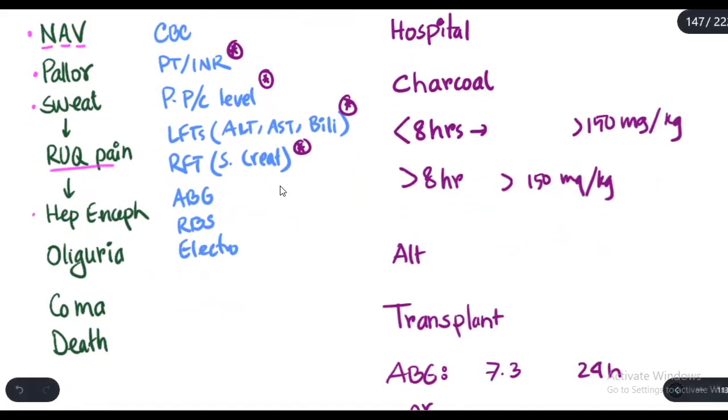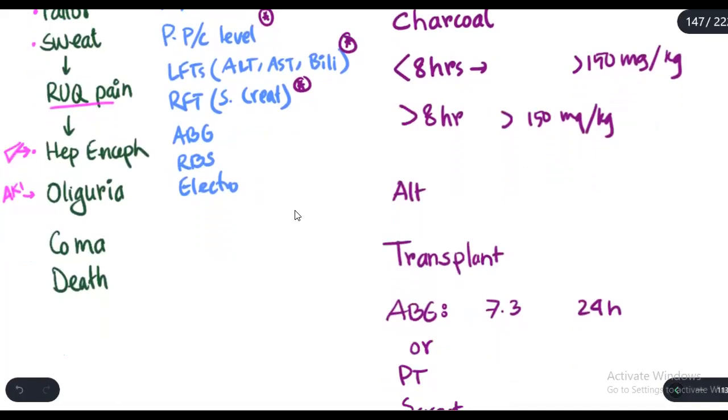In advanced paracetamol overdose, the patient will develop liver failure, also known as acute liver failure, manifested as hepatic encephalopathy. The patient will also develop AKI or acute kidney injury leading to oliguria. And when hepatic encephalopathy is of grade 4, the patient moves towards coma and ultimately this can lead to death.